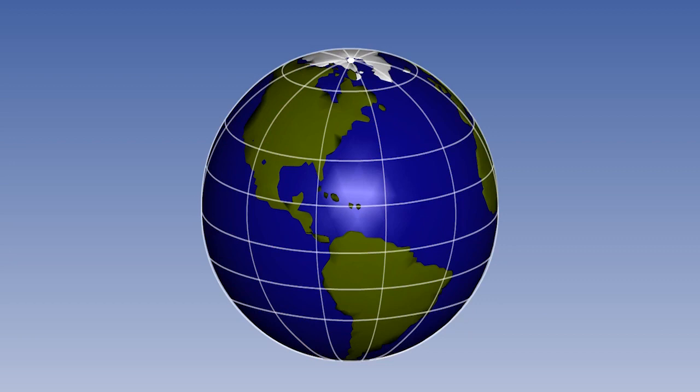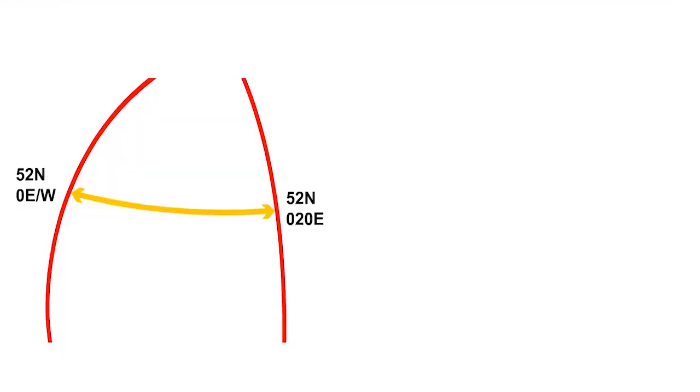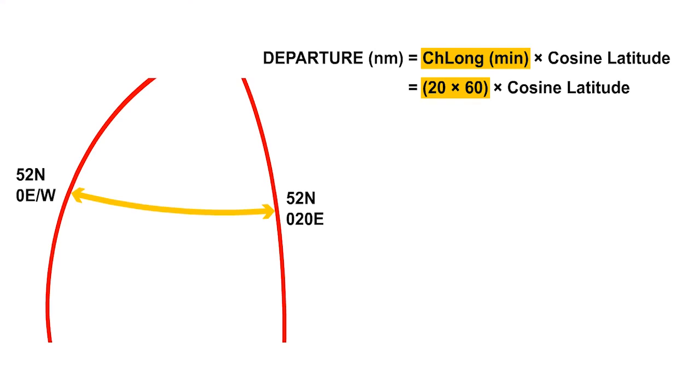Consider two meridians on the Earth, joined by a parallel of latitude. We can extract the basic elements of this situation in the sketch. In this example, the change of longitude is 20 degrees. Multiply by 60 to convert it into minutes, then multiply by the cosine of 52 degrees. This gives a departure of 738.8 nautical miles.